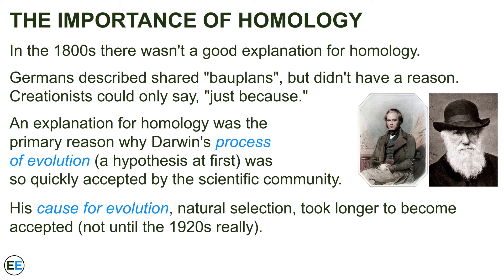In the history of biology and evolutionary theory, homology has a central role. In the 1800s, there wasn't a good explanation for homology. Biologists had identified a bunch of similarities — some made sense as analogies, but others, like the bones in the forelimbs of mammals, had no good explanation. This obvious and clear pattern demanded an answer, but biology lacked one. An influential German idea at the time was that there were a limited number of bio-plans — something like biological blueprints — for living things, but those natural philosophers didn't have a good explanation for why there was such a limit. All creationists could say was, 'that's just the way things are,' which is an unsatisfying explanation. An explanation for the presence of homology was the primary reason why Darwin's process of evolution was so quickly accepted by the scientific community — providing a logical explanation for something that had been mystifying biologists for decades was a triumph of evolutionary theory.